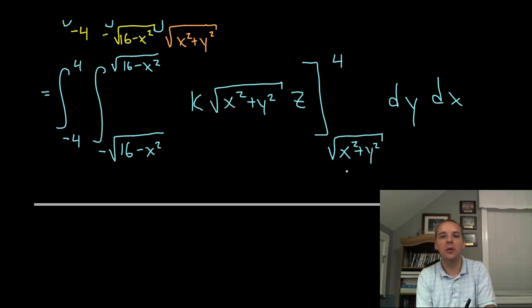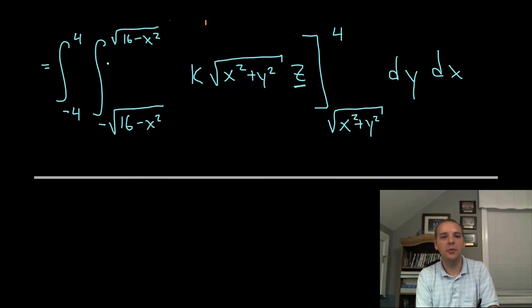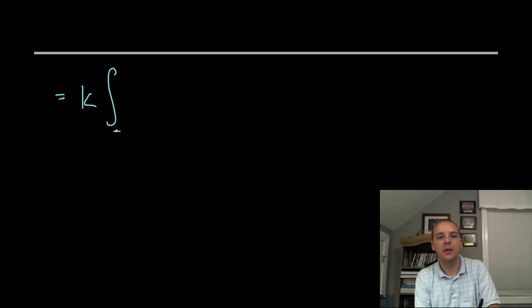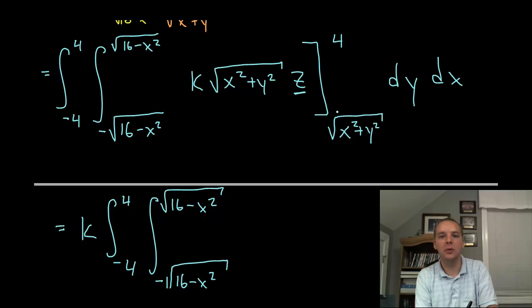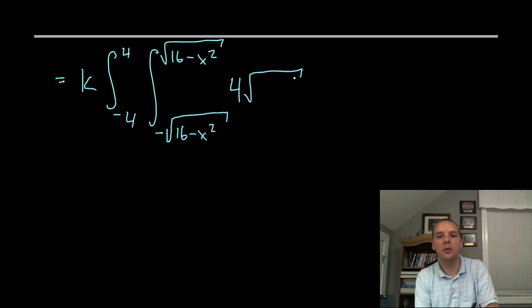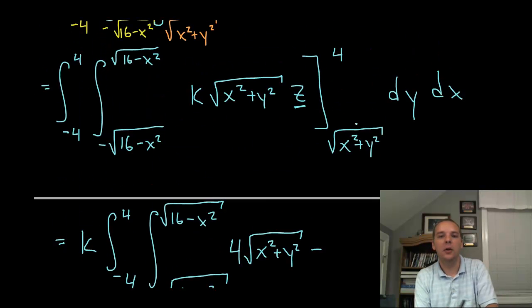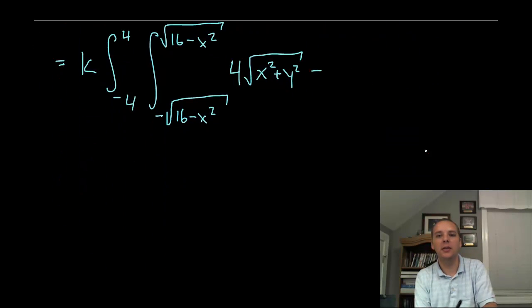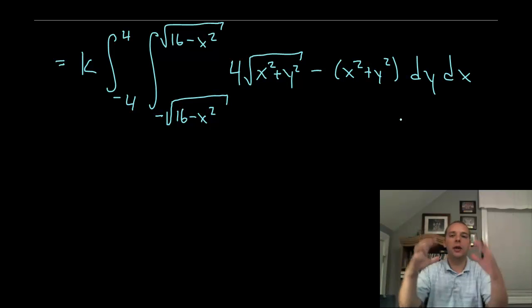Alright now it's time to plug them in now who do we plug these in for? We plug them in for z cause we just integrated with respect to z. So what I'll probably do is I'll move the k out since it's a constant. I'll keep the outer two limits of integration. And then I'll plug in four and the square root of x squared plus y squared in for z and subtract. You plug in four you get four square root of x squared plus y squared and then minus. Alright when you plug in the square root of x squared plus y squared in for z you get the same quantity squared. Which will really just negate the square root. So you get x squared plus y squared dy dx. Okay so we've reduced the triple integral down to a double integral.